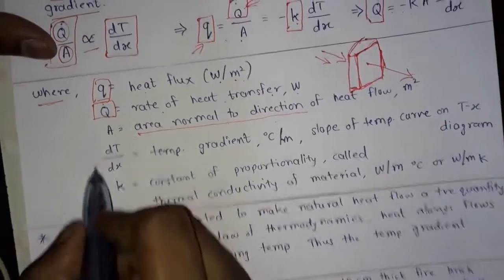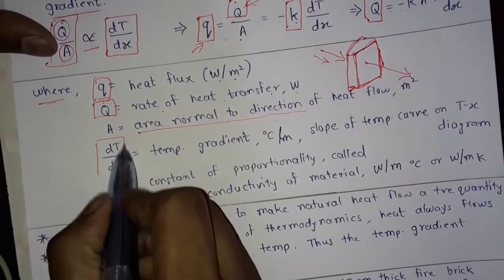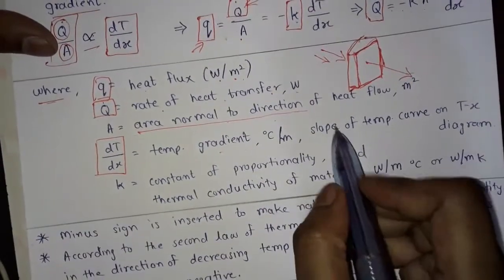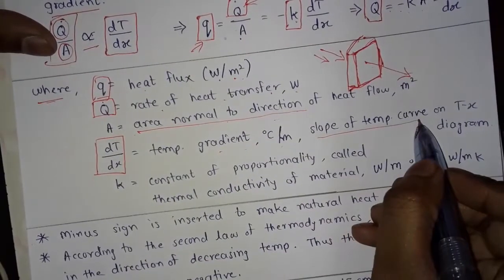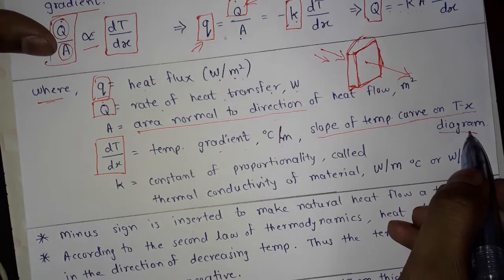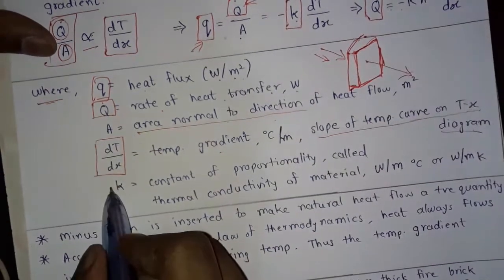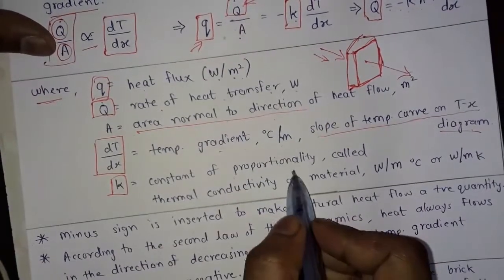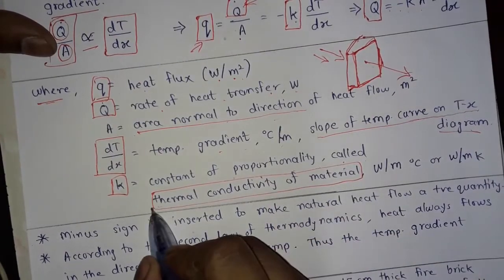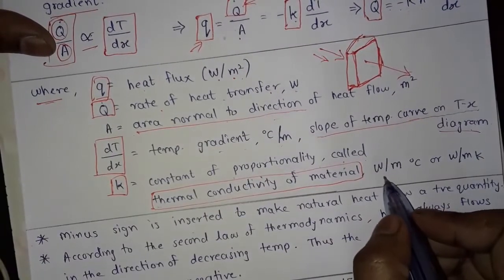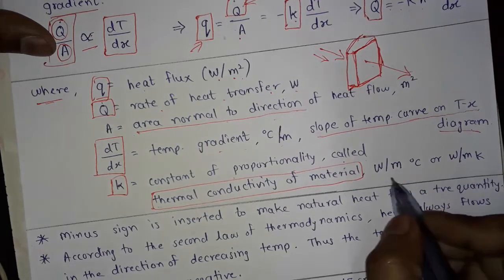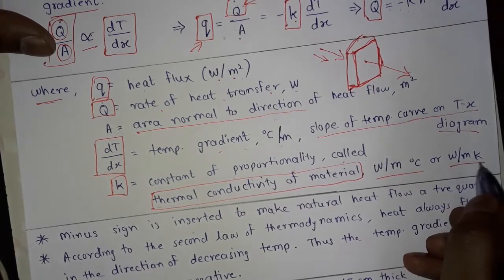dT upon dx is the temperature gradient in degrees Celsius per meter, also called the slope of temperature on a T-x diagram. k is the constant of proportionality called thermal conductivity of the material, and its unit is watts per meter degree Celsius or watts per meter Kelvin.